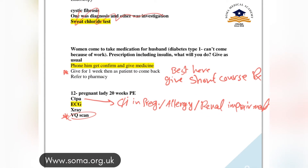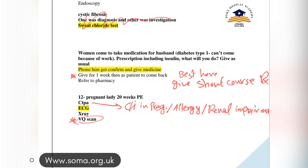This is a very new and important question. A woman comes to your clinic asking about taking medication for her husband, who has type 1 diabetes and cannot come today because of work. He is a good follow-up patient but simply could not attend today.